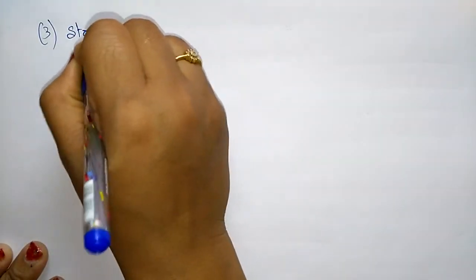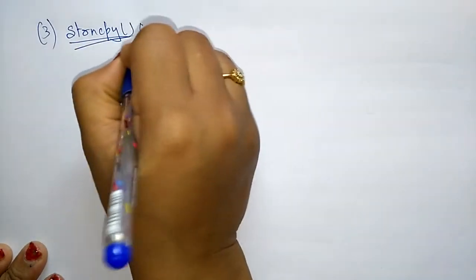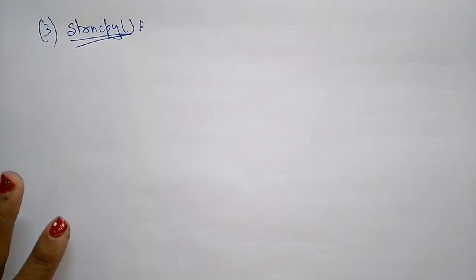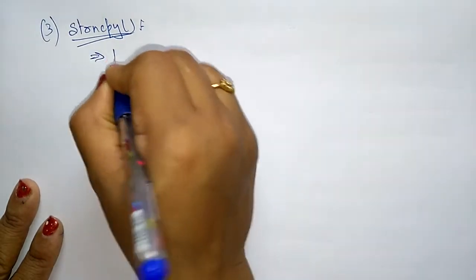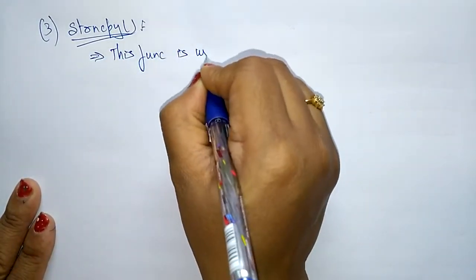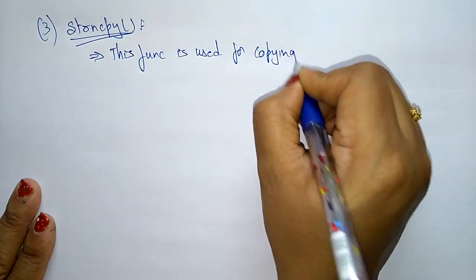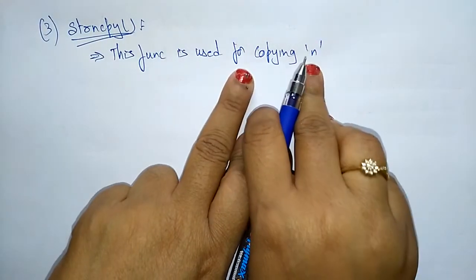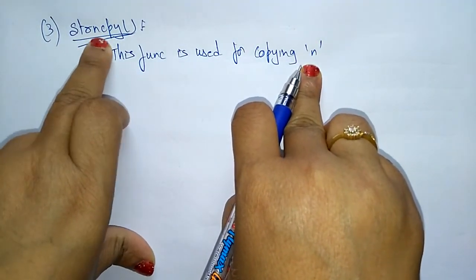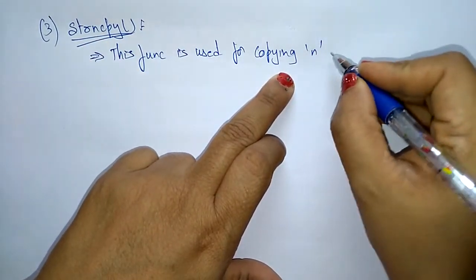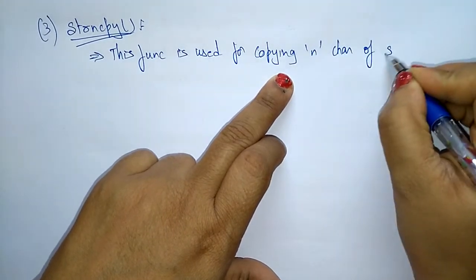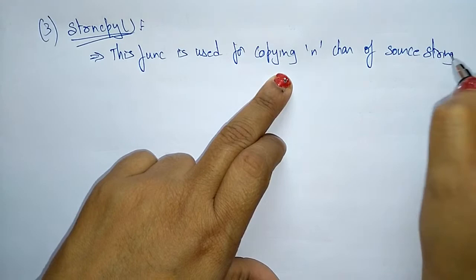Hi students, let us continue with the string library functions. In the previous videos I explained about string copy and string length. Now let us see the third library function: string n copy. In string copy we are just copying the source string to the destination string. String n copy is used for copying n characters — n means copying n characters of source string.